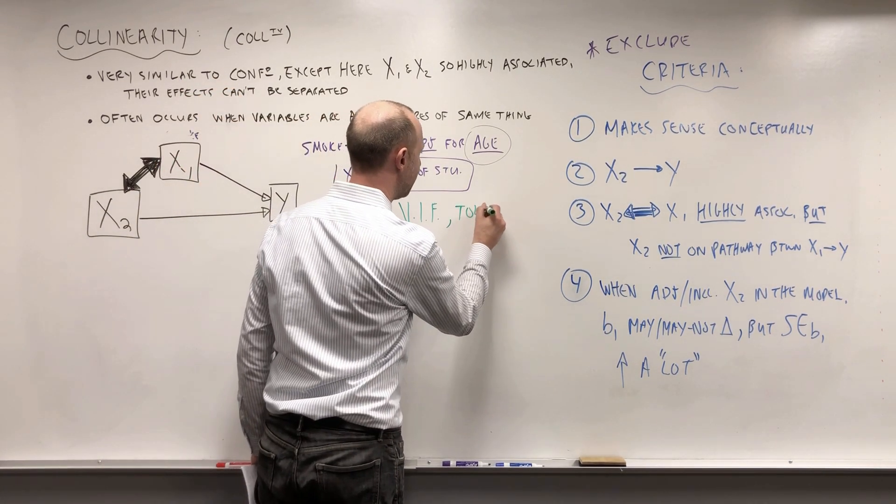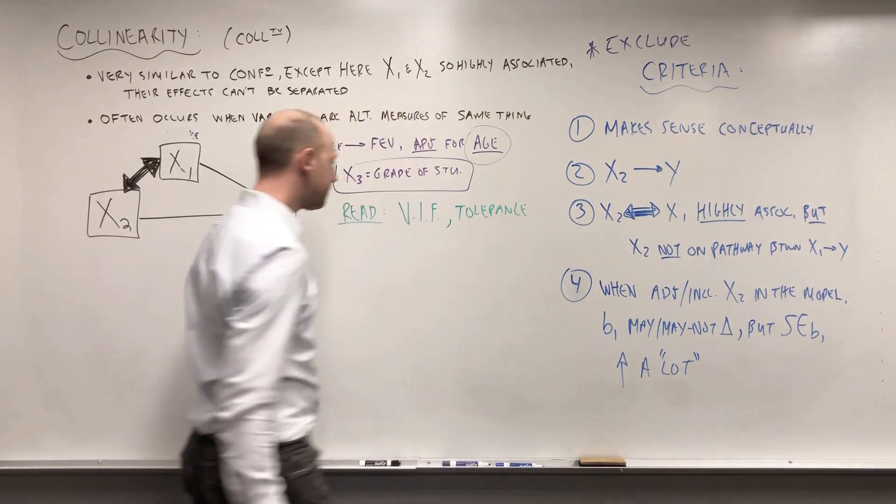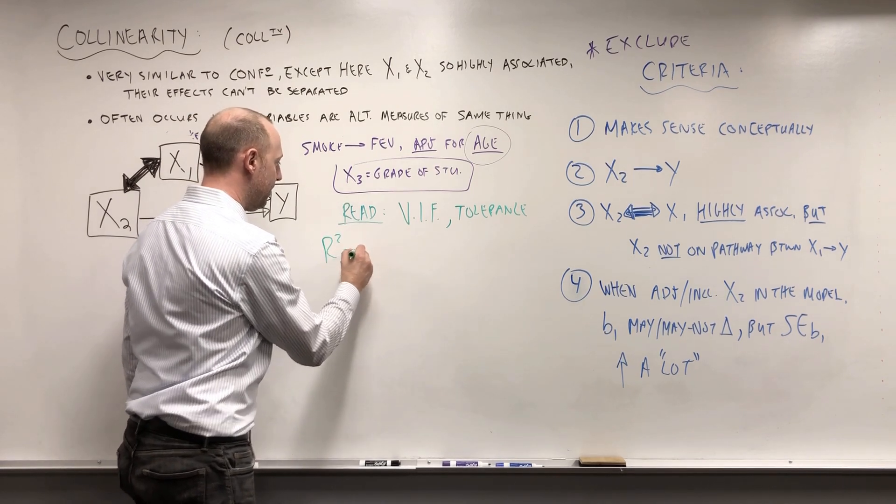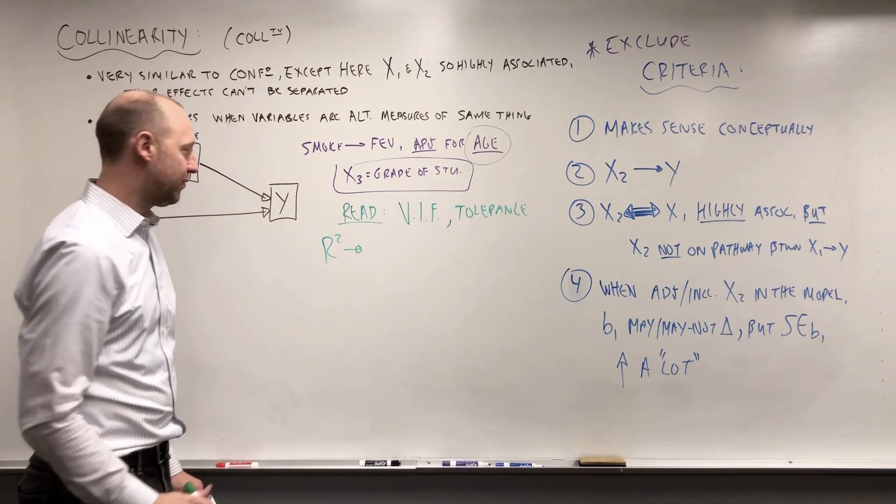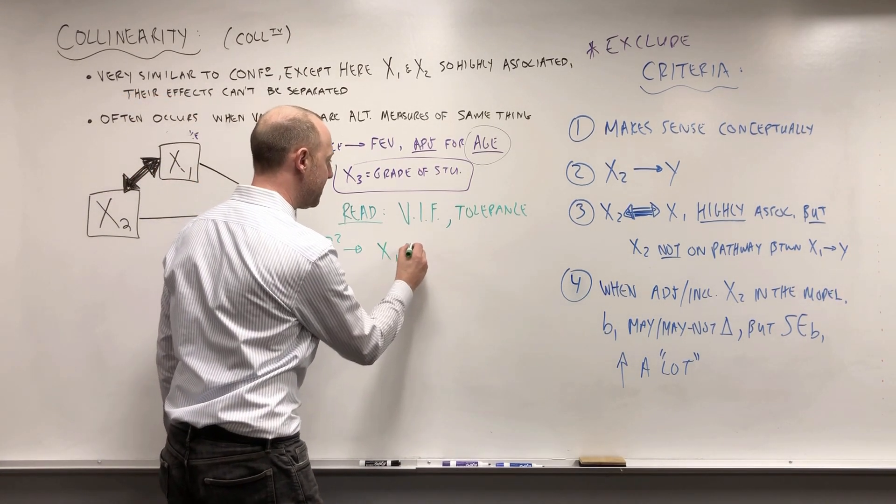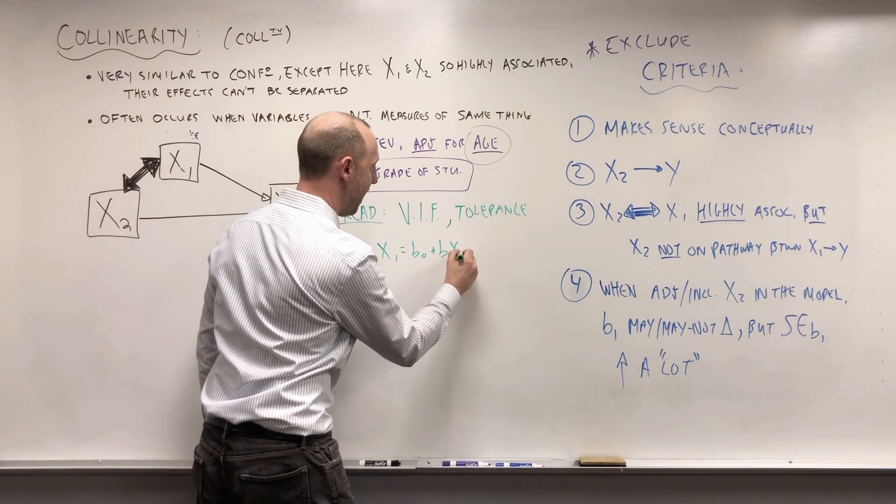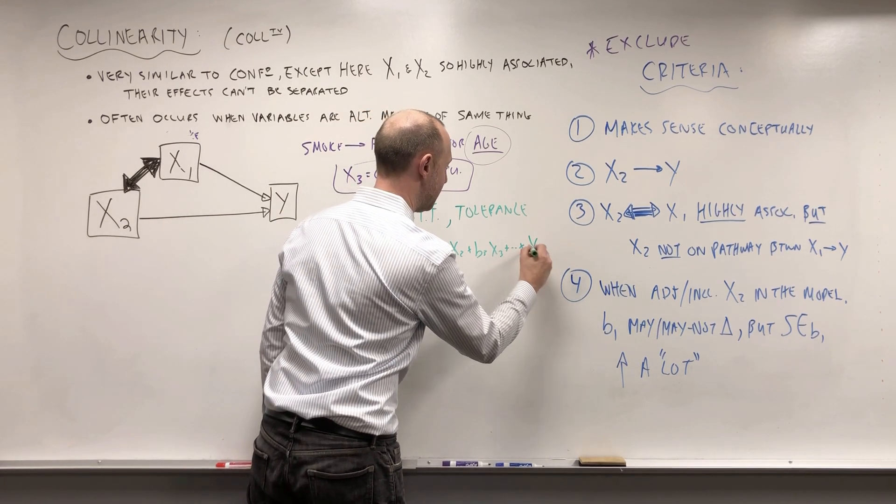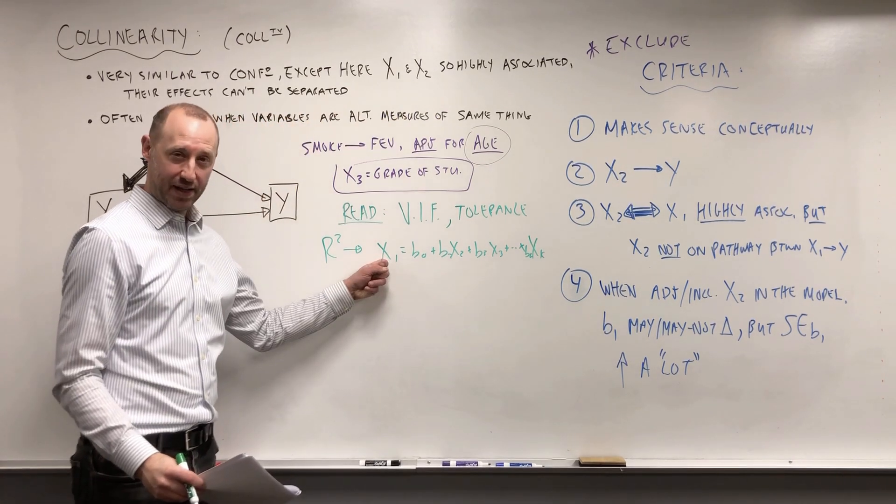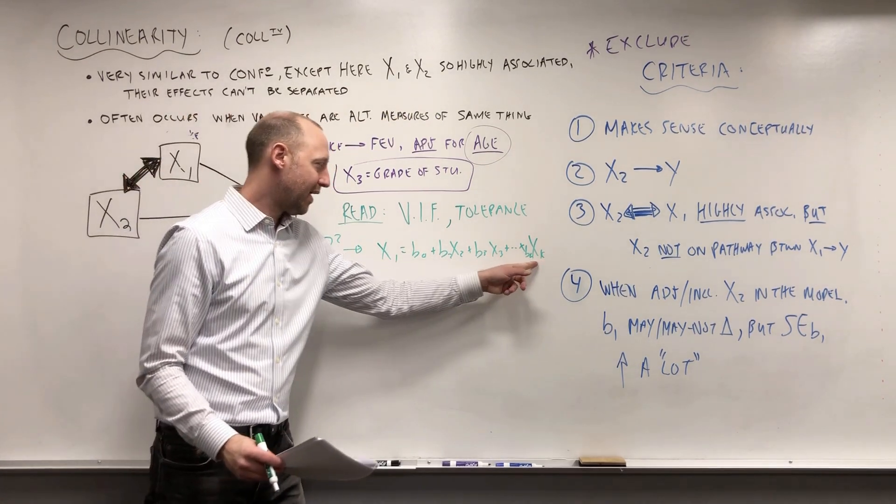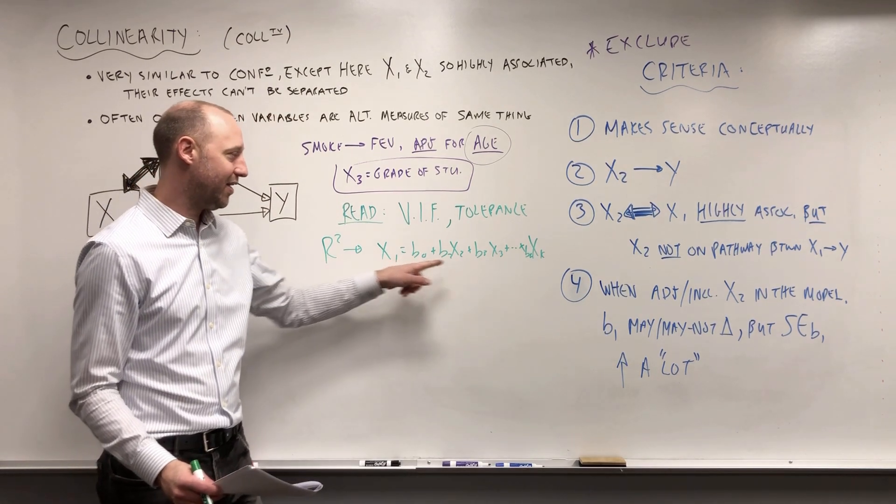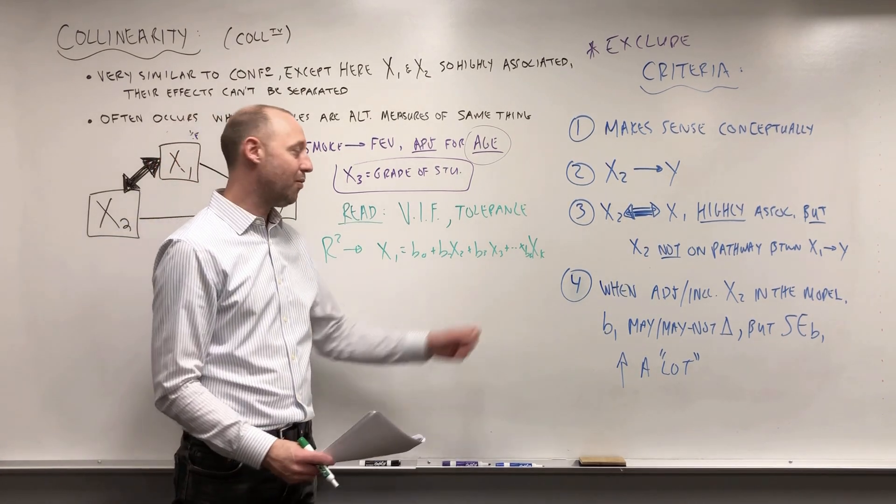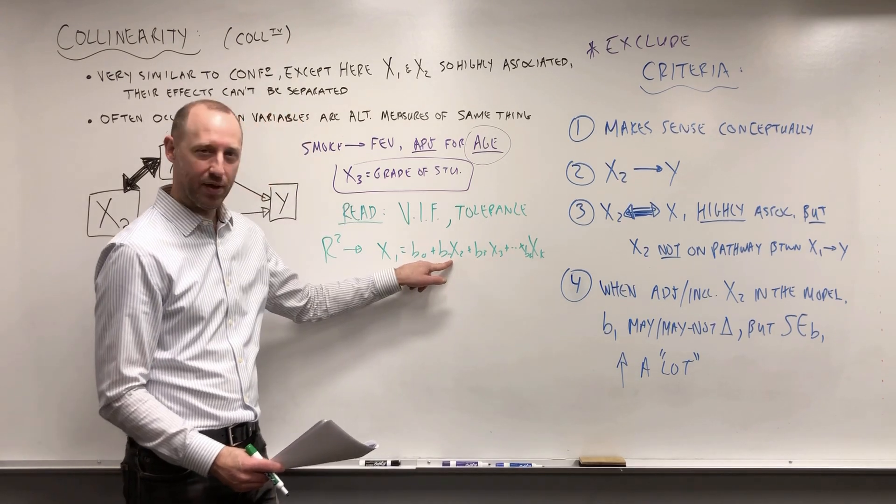There's other things like tolerance, and very much related to these. What they essentially do is some form of getting R-squareds from models where they might say, let's fit a model to see how well X2, X3, all the way up to our last X variable Xk, how well they can estimate X1.